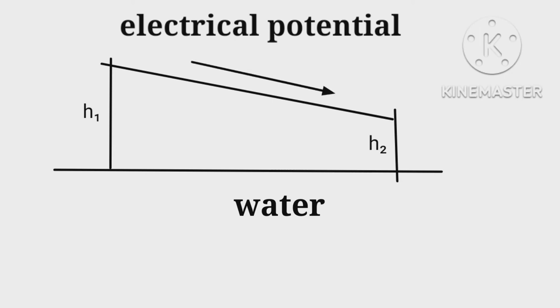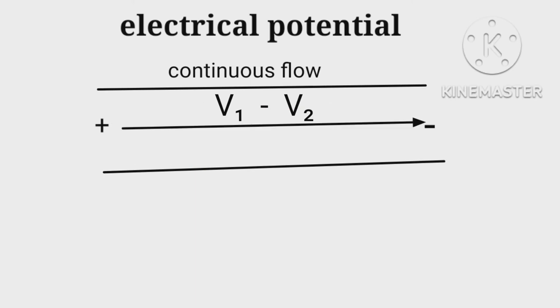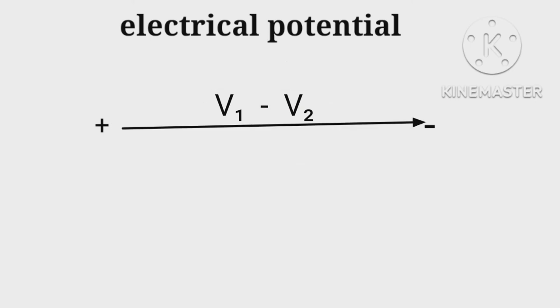Therefore, if we want to have a continuous flow of current, we must create the same kind of potential difference between positive and negative charges. It depends upon potential of charge by which it can move. Therefore, we have to define potential first.